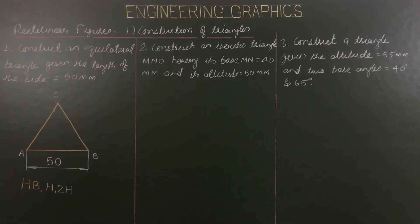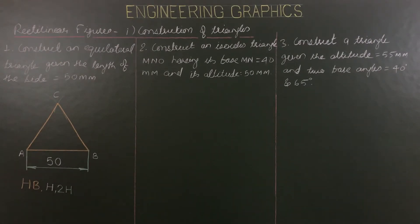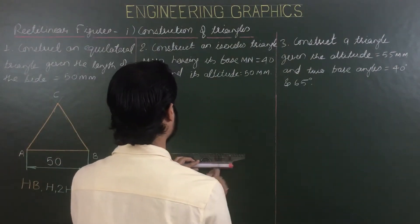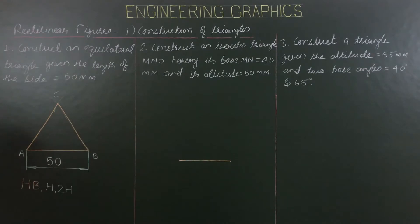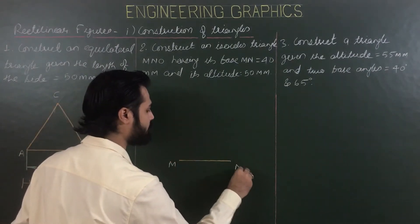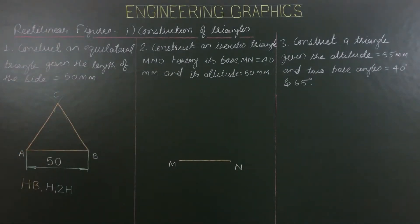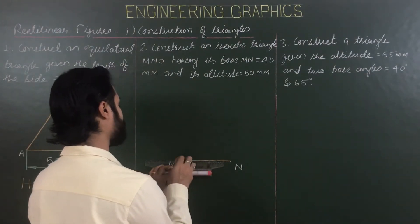Second question: construct an isosceles triangle MNO having its base MN equal to 40 mm and its altitude equal to 50 mm. Isosceles means two sides of a triangle are equal; the third may not be equal. The length of the base is 40 mm. Draw a line of length 40 mm for the base MN. The altitude is 50 mm.